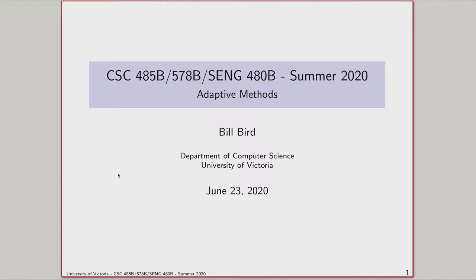One reason we really like arithmetic coding — and we can apply this to Huffman coding as well, although this lecture frames it in terms of arithmetic coding — is that the startup cost of arithmetic coding is very low. There's no requirement to build a Huffman tree. We just need to work out the probability and cumulative probability of each symbol, and that's it. There could be entire courses just on adaptive models for statistical encoding schemes.